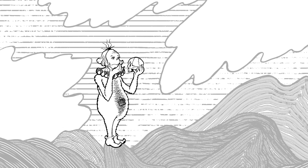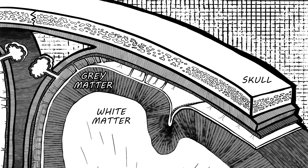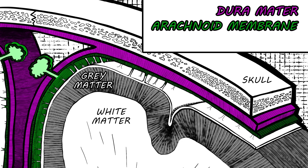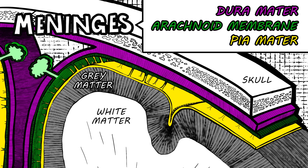Besides the skull, the brain has other strong protection, with meninges as a barrier and with CSF shock absorption. The dura mater, arachnoid, and pia mater are meninges.